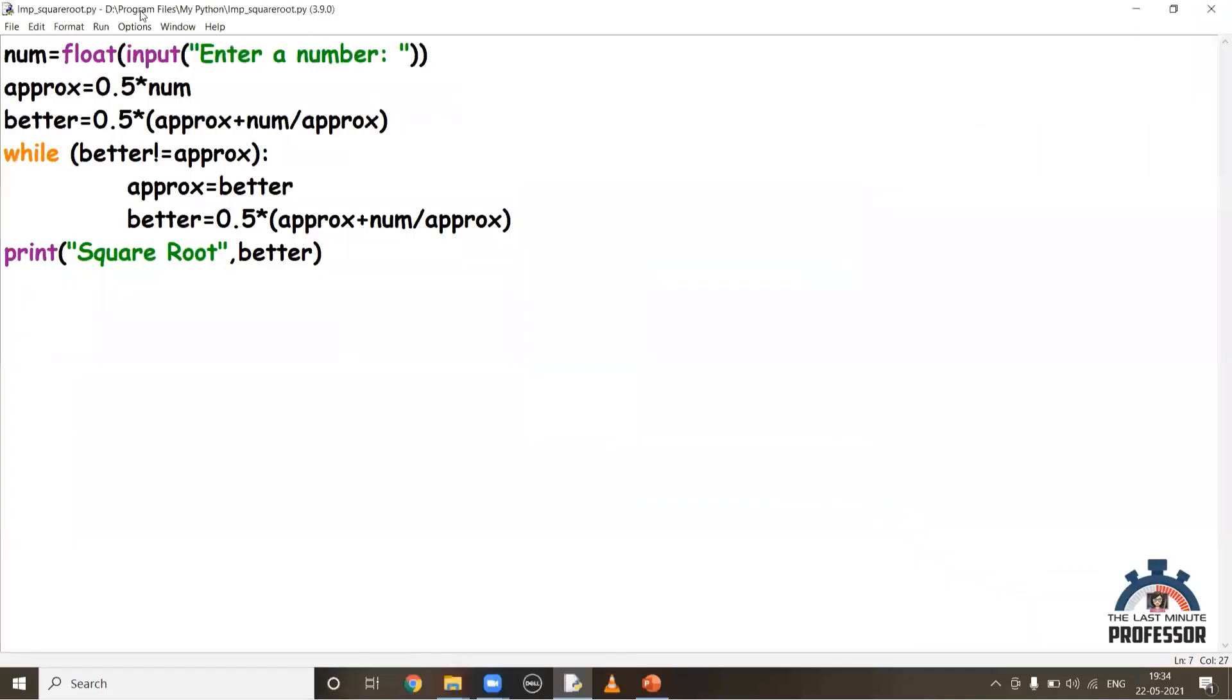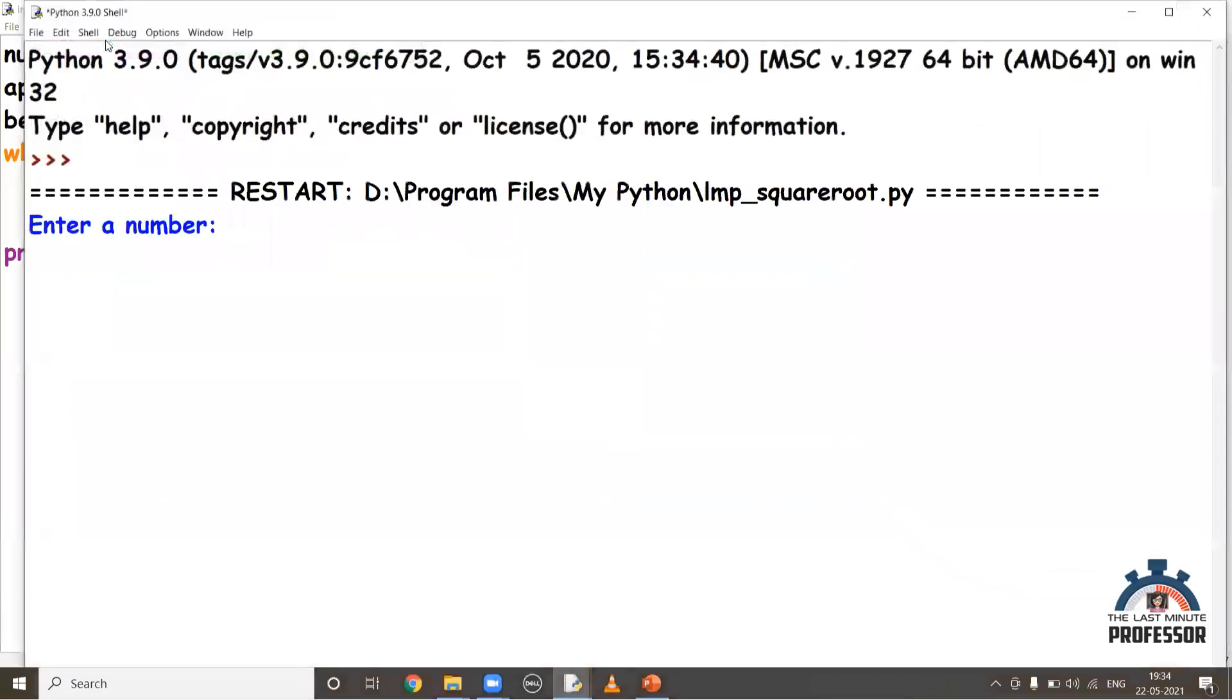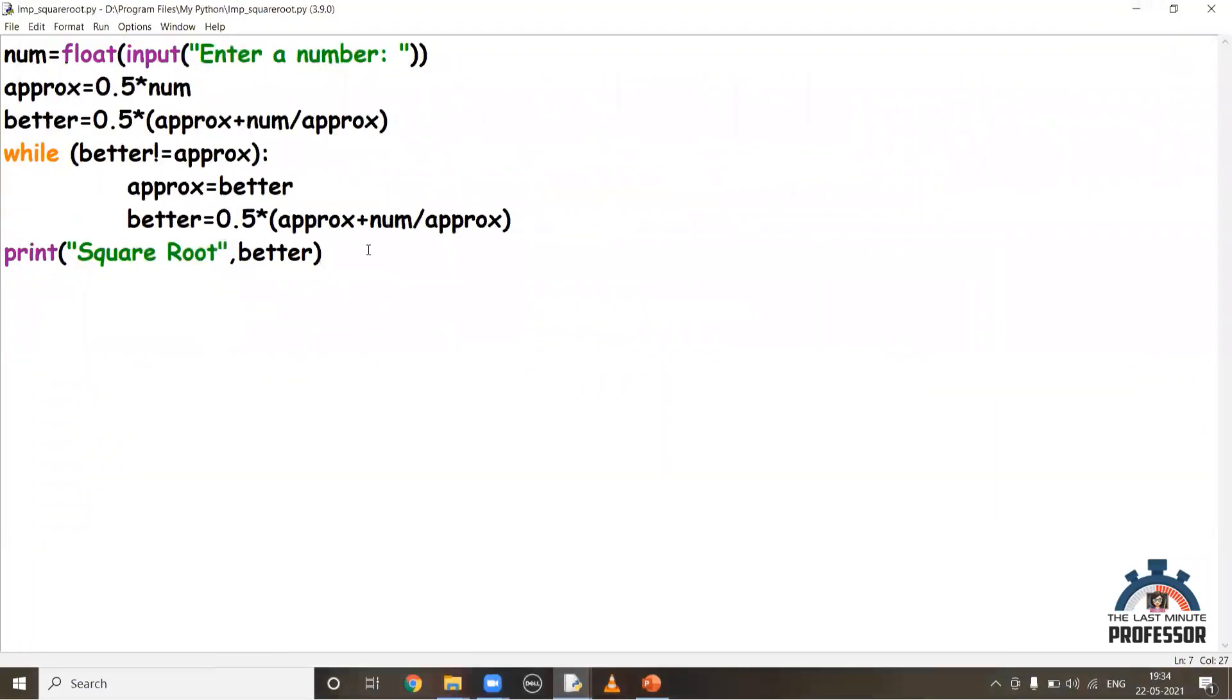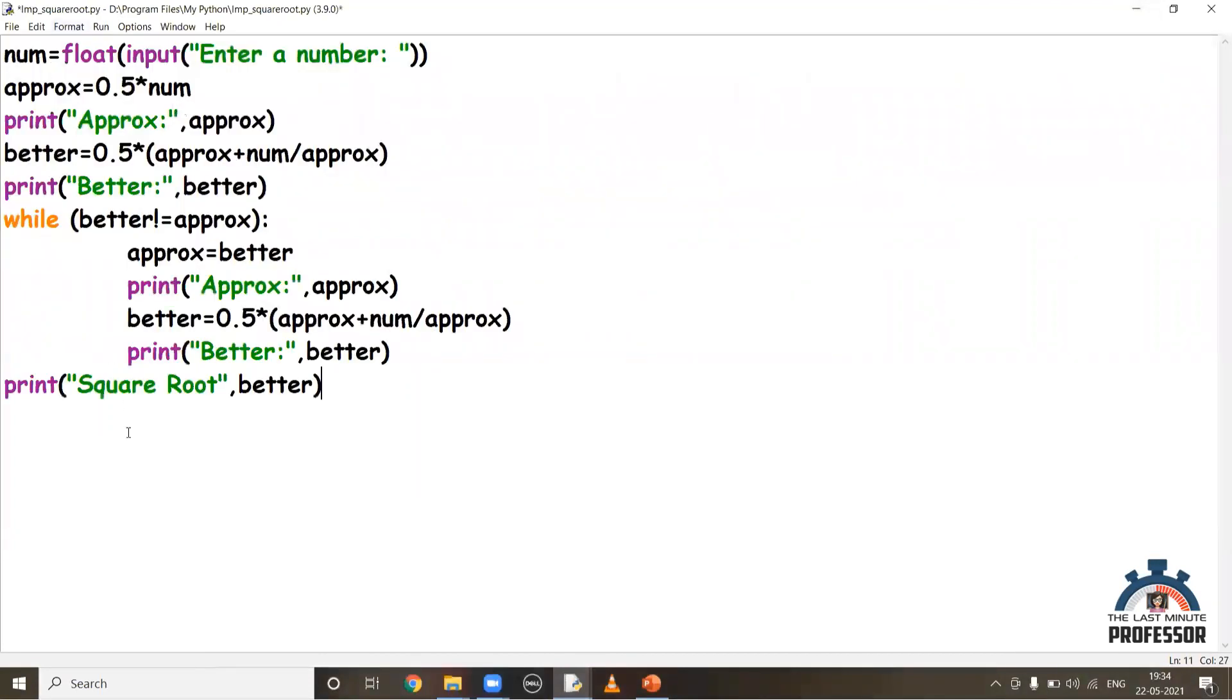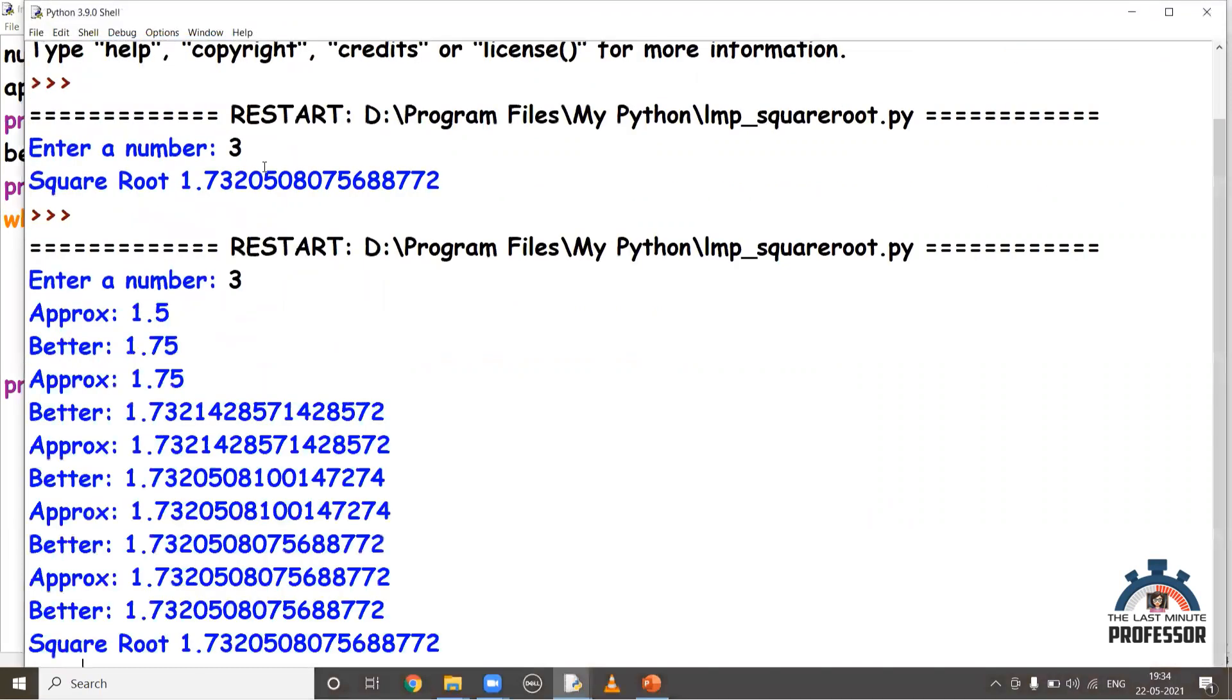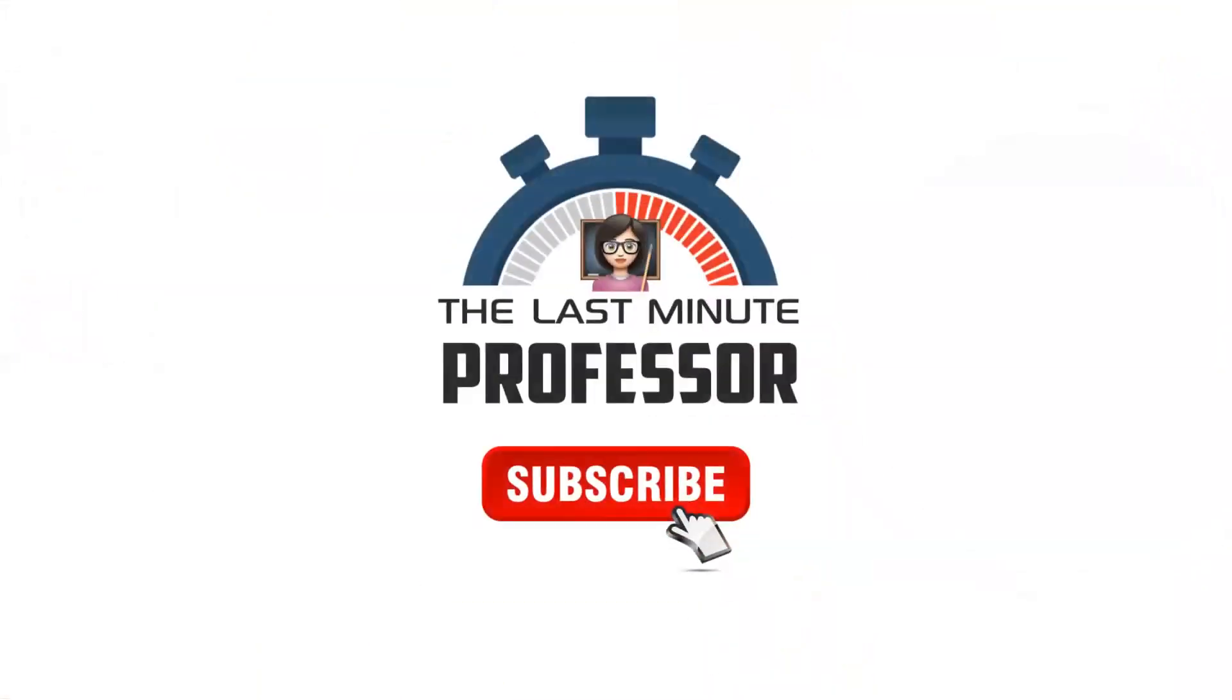Let me copy paste the code and run to find the square root of 3. I get the output here. Suppose you want to get more details about approx and better values at each and every step, you can just add print statements as you see on the screen and execute. In that case, you'll be getting the step-by-step answer as you see on the screen. That's it. To encourage and support this work, do like, share and subscribe.